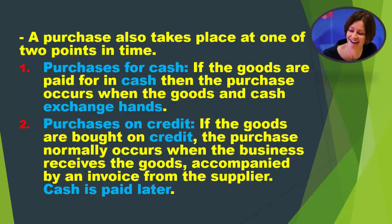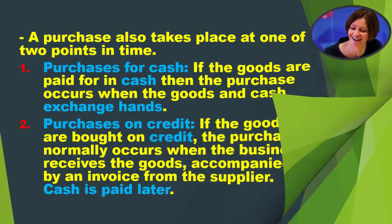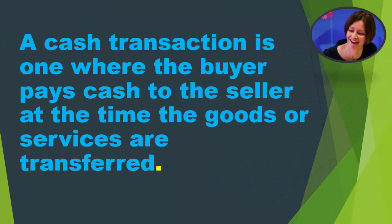Second, purchases on credit: if the goods are bought on credit, the purchase normally occurs when the business receives the goods accompanied by an invoice from the supplier. Cash is paid later.